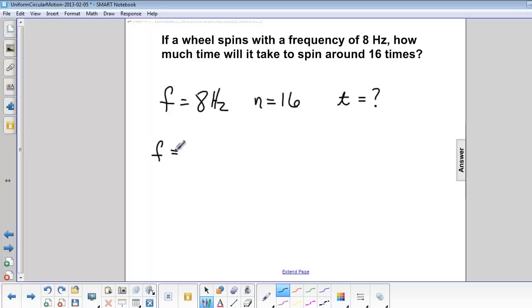The frequency is equal to the number of cycles over time. Multiply both sides by T, and we have T times F equals N.